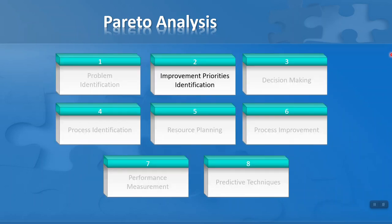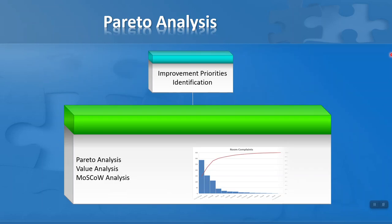We're in section two of our course here where we want to identify priorities for improvement. There may be many things that need to be improved, but we need to know which ones to tackle first and which are the most important ones to tackle. Within this section we have three techniques, and the first of these is Pareto analysis, the subject of this lesson.